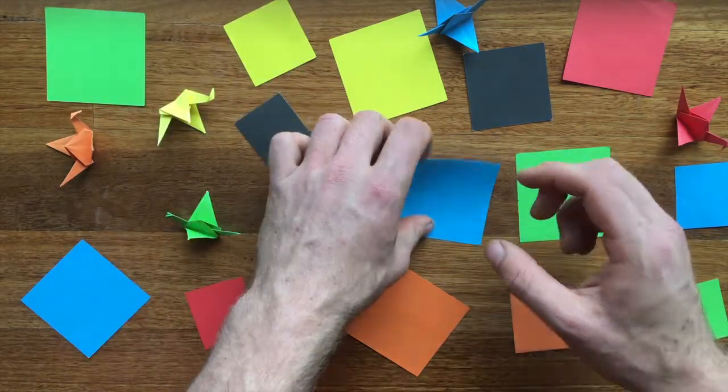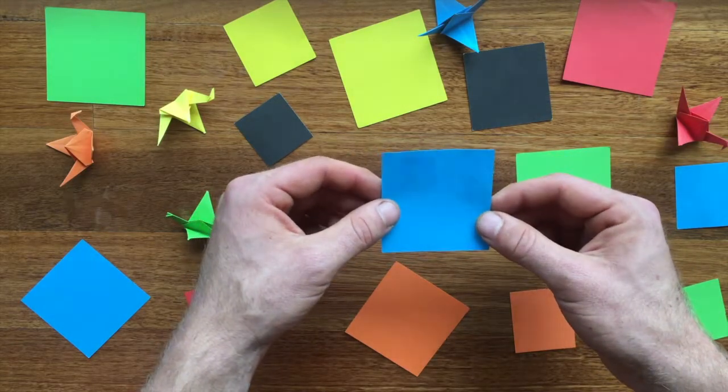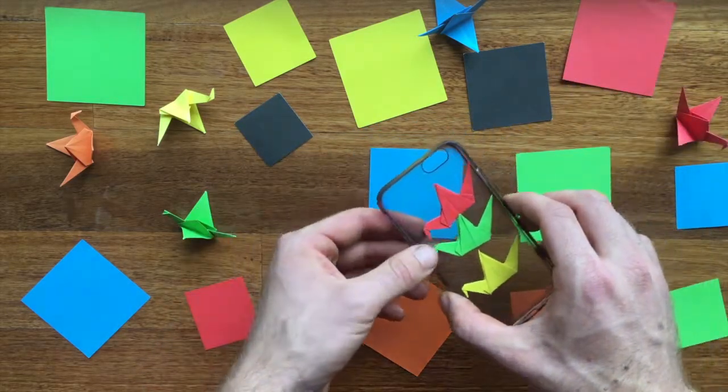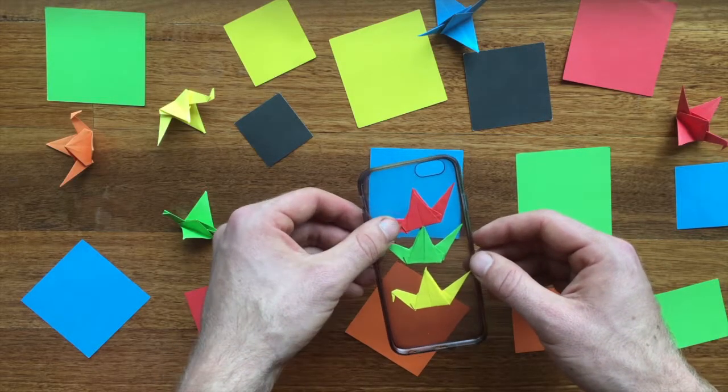I find that a five, six, or seven centimeter square works really well for gifting origami cranes because you can carry the cranes quite neatly in a phone case and I find that carrying them on my person makes them a lot easier to gift.